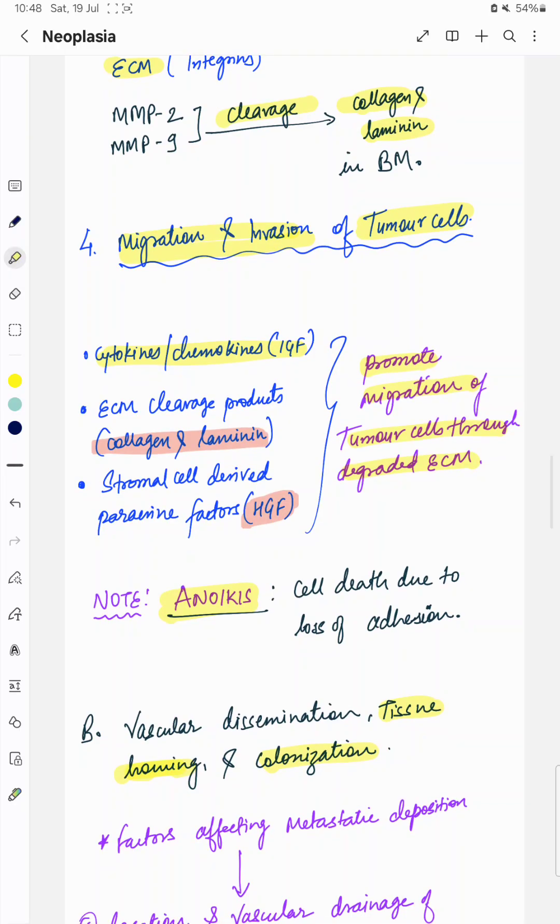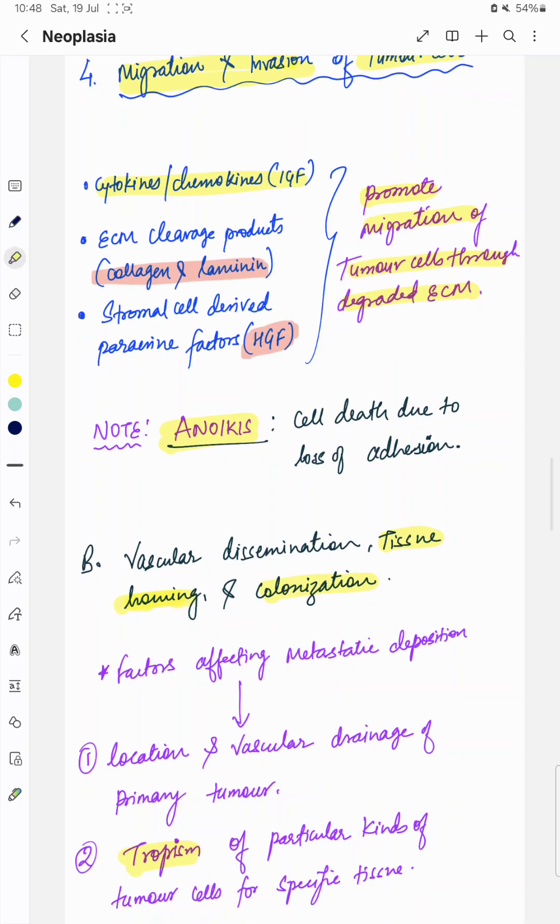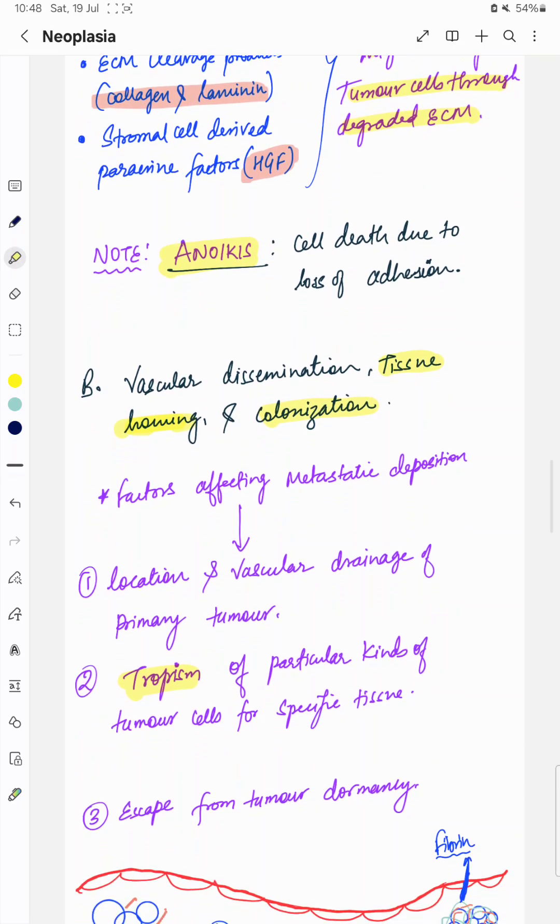A term, anoikis, refers to cell death due to loss of adhesion. Now we have discussed the invasion of extracellular matrix and now cancer cells reached the vascular channel. After this, there will be vascular dissemination, tissue homing and colonization.